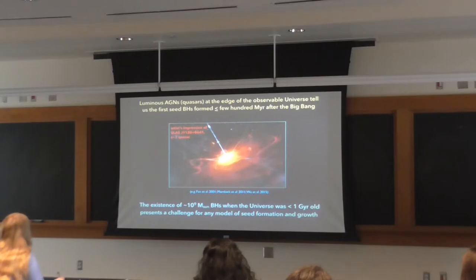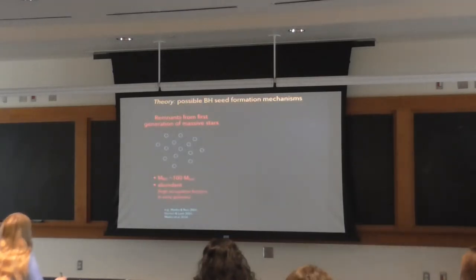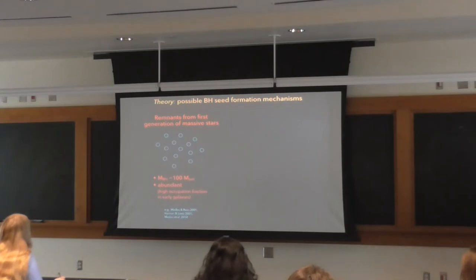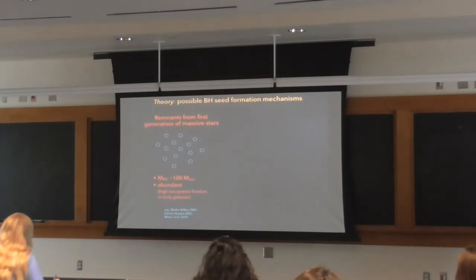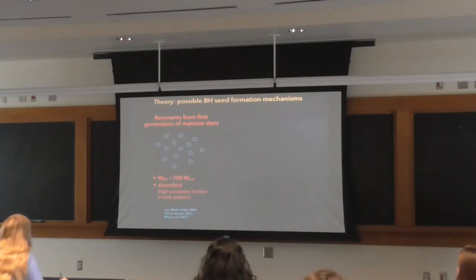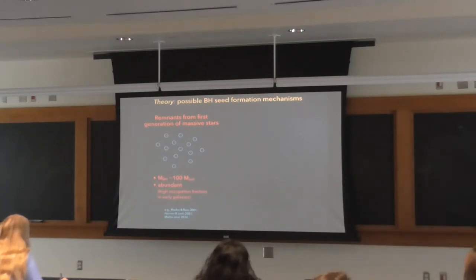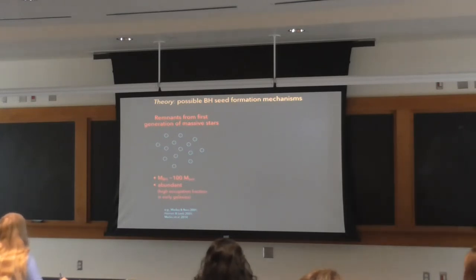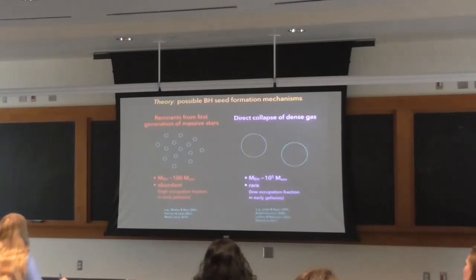There are a couple of theories for how the first black hole seeds may have formed. One idea is that the seeds formed from the first generation of massive stars. At the end of their very short lifetimes, these massive stars would explode as core-collapse supernovae and leave black hole remnants with masses on the order of tens to hundreds of solar masses. If this is how seeds were produced, they would be pretty abundant, with most early low-mass galaxies hosting at least one.